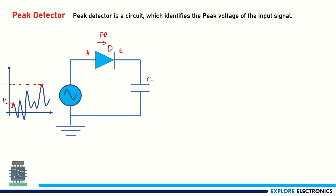The capacitor charges to the peak value — let's say 1 volt. The voltage across the capacitor is 1 volt. As the input decreases, the diode cathode is at 1 volt while the anode voltage is reducing, so the diode goes to reverse bias and acts as an open circuit. There is no current flow through the diode, so the capacitor holds its charge of 1 volt.